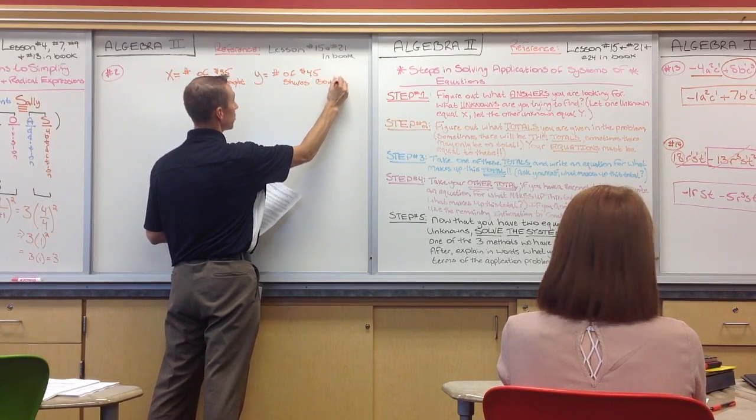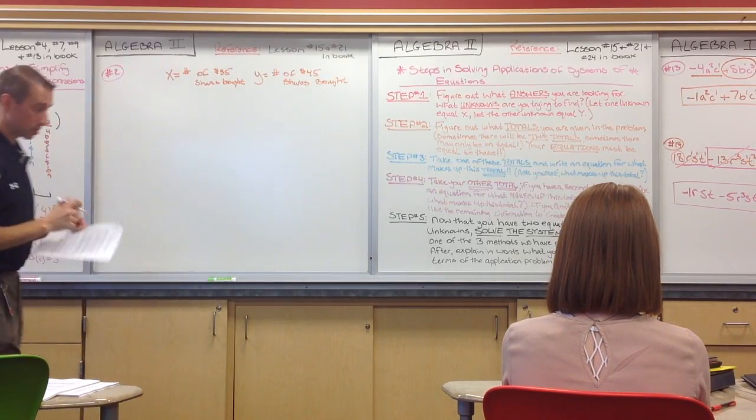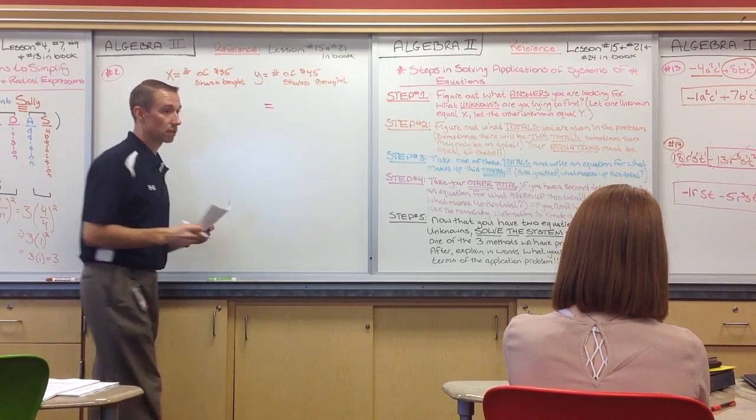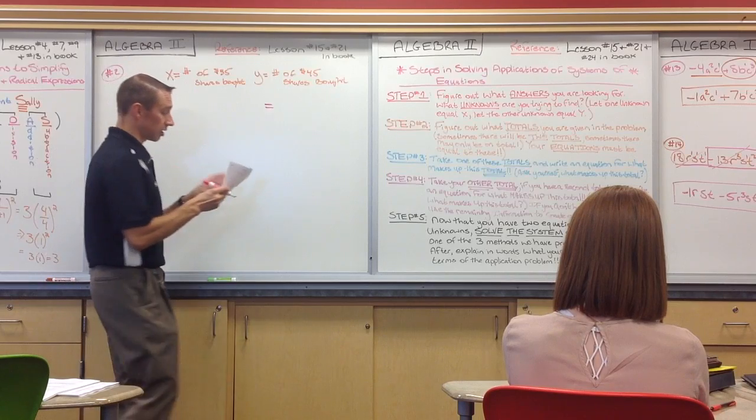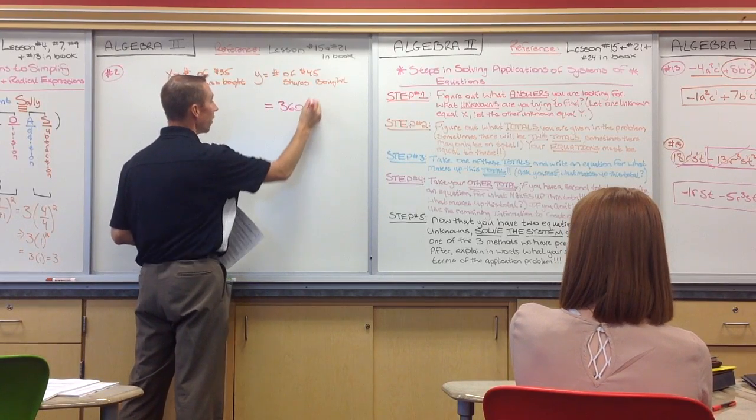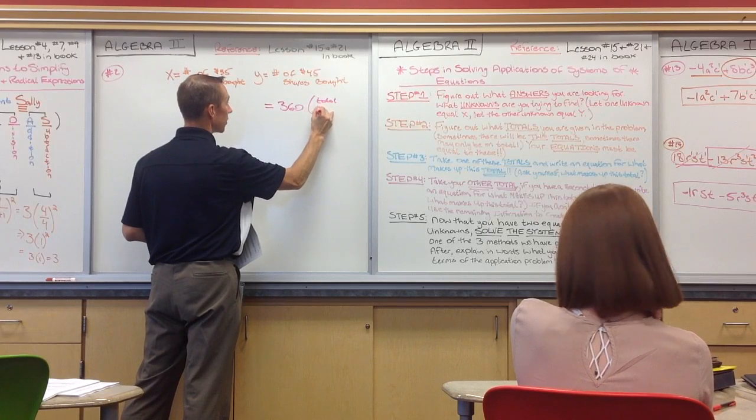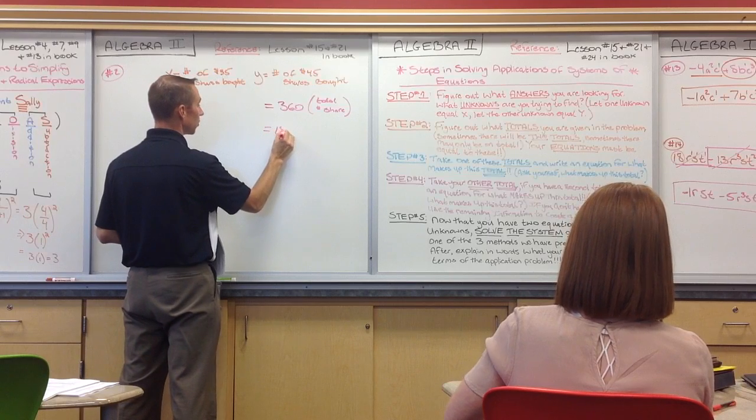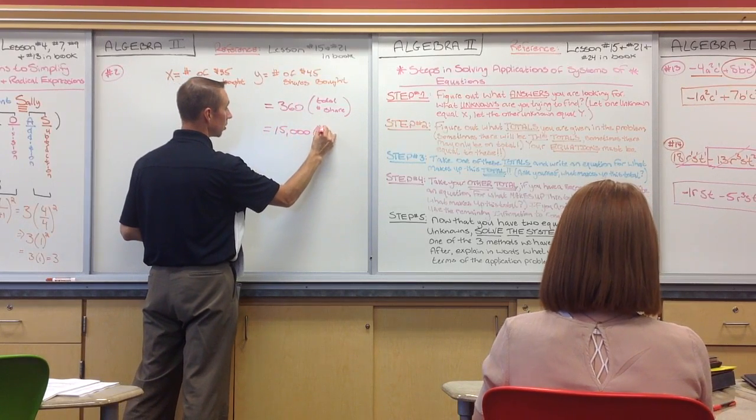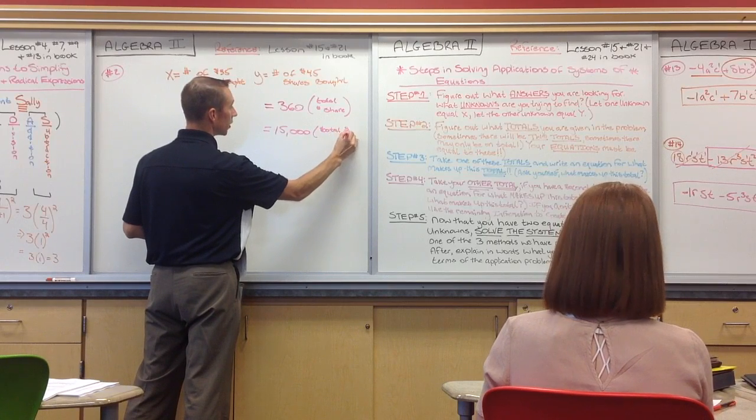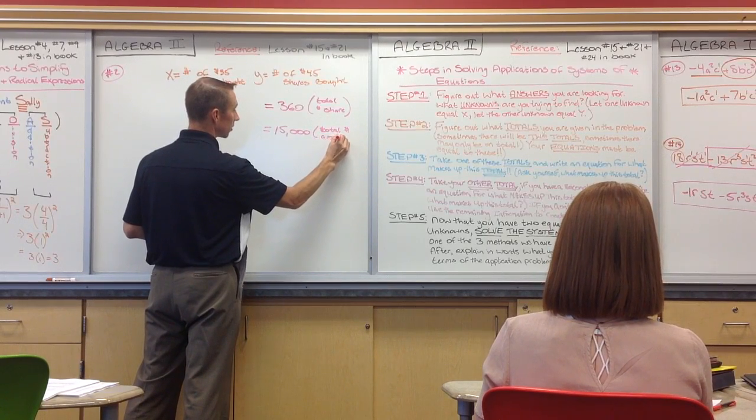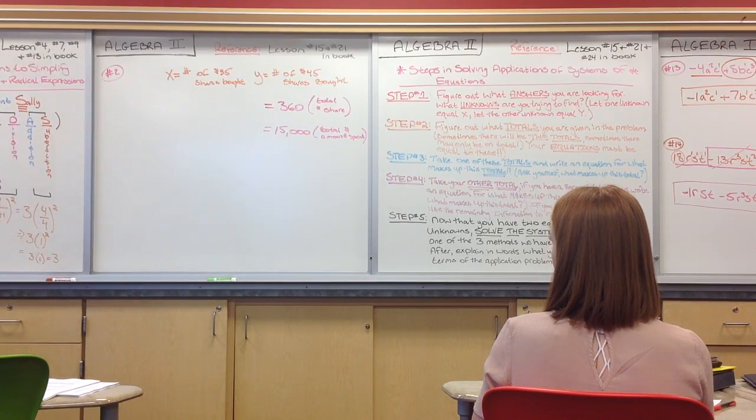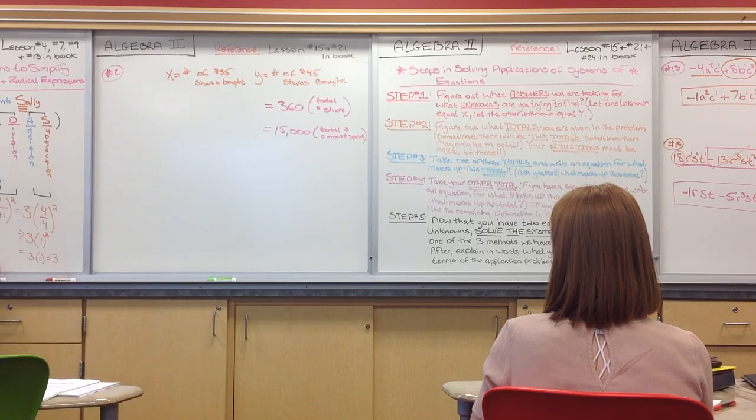Now, step two is what? Find your totals. What totals am I giving here? 360 total shares. That's a total number of shares. What's the other? $15,000, which is what? Total dollar amount spent.